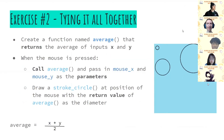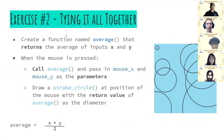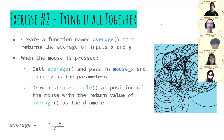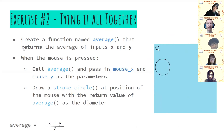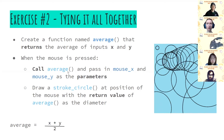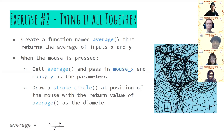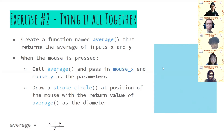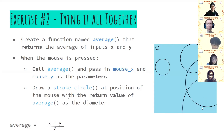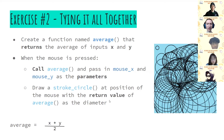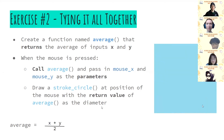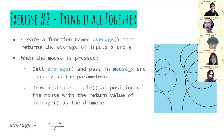Now we're on to the second exercise, where we're going to tie everything together. Create a function named average with two parameters, x and y. It's going to return the average of those two numbers. Then whenever the mouse is pressed, call average passing in mouse_x and mouse_y — that returns the average of those two. Use that returned value as the diameter to draw a stroke circle at the position of the mouse. We'll move you to breakout rooms for 10 minutes.